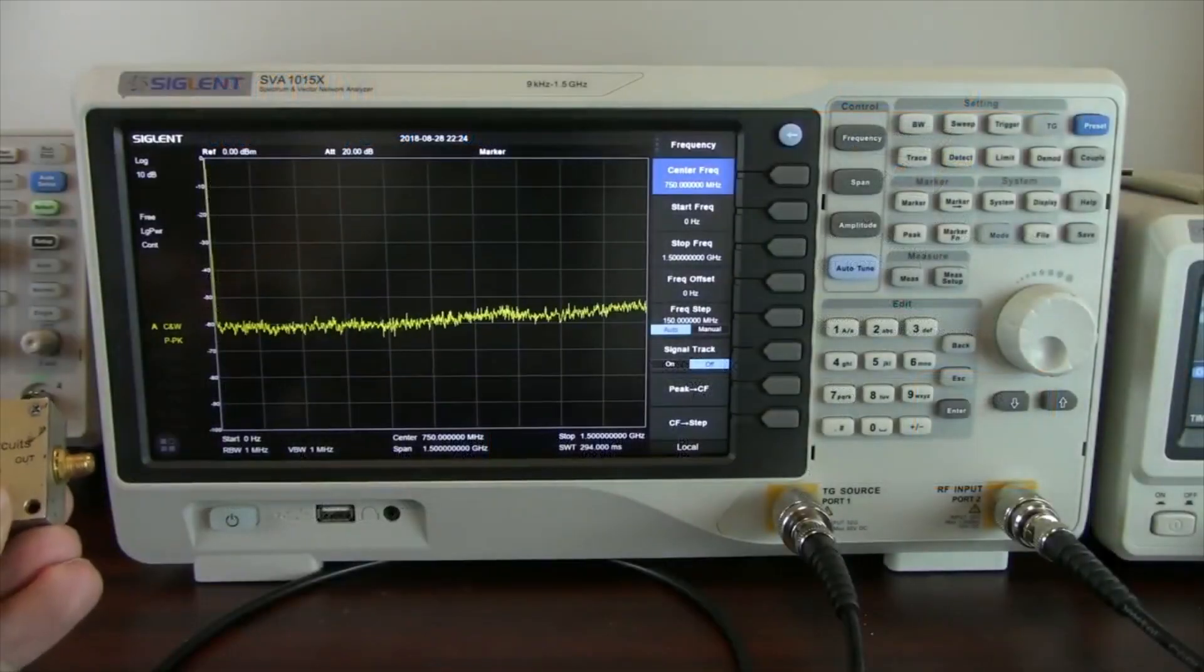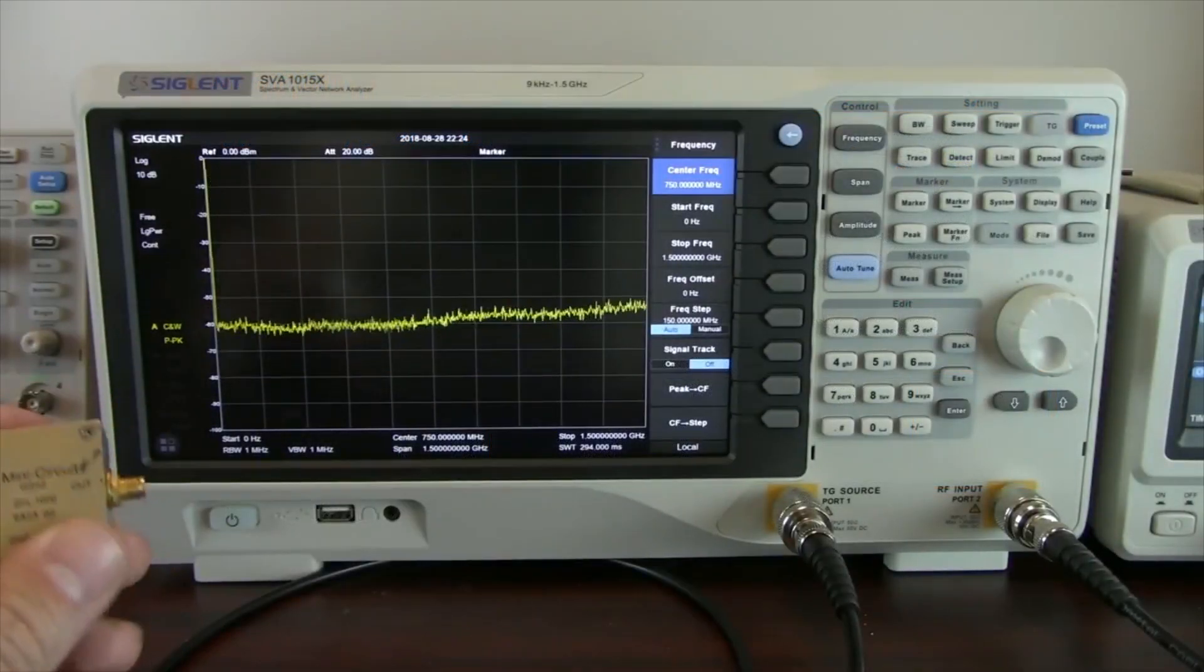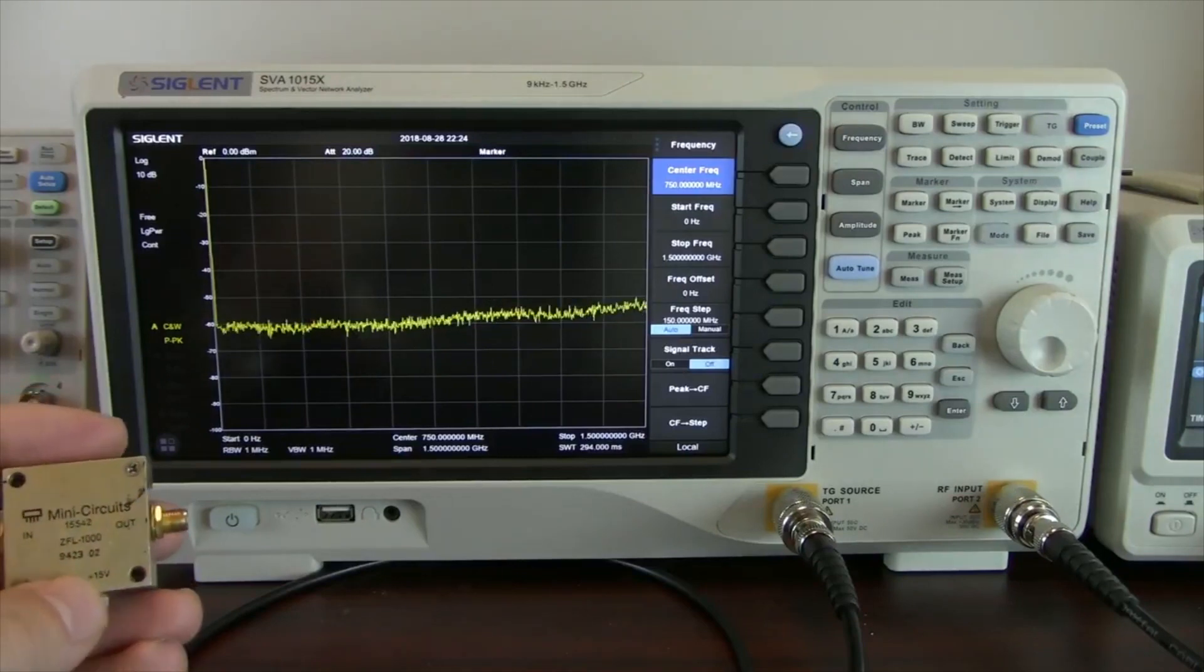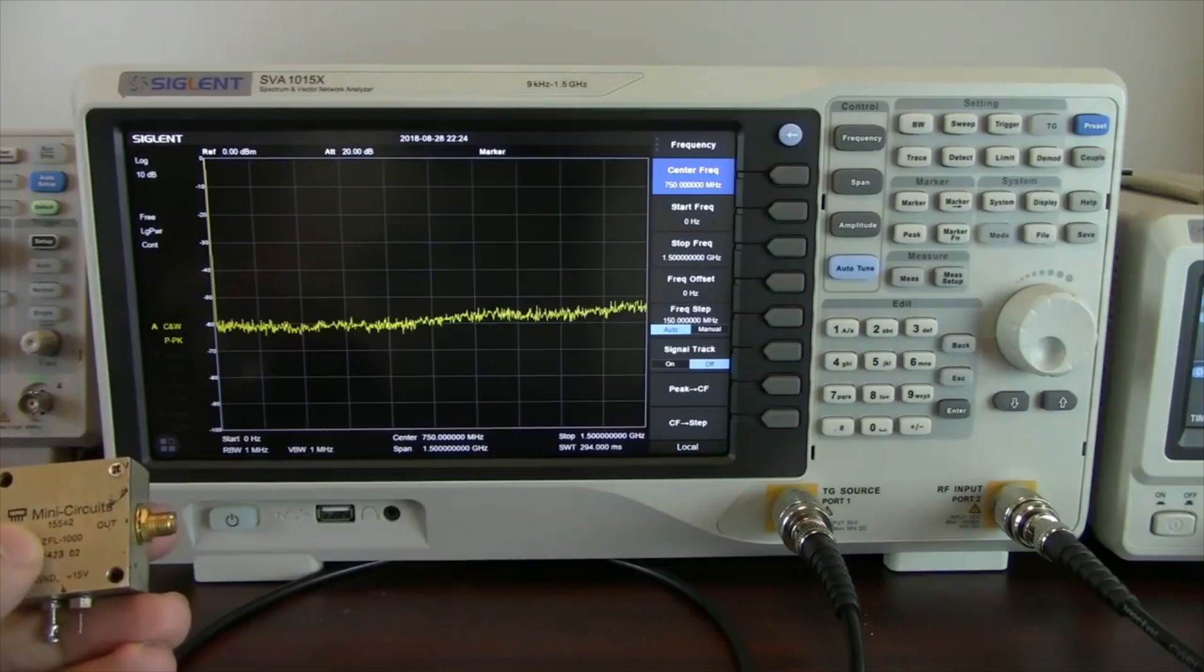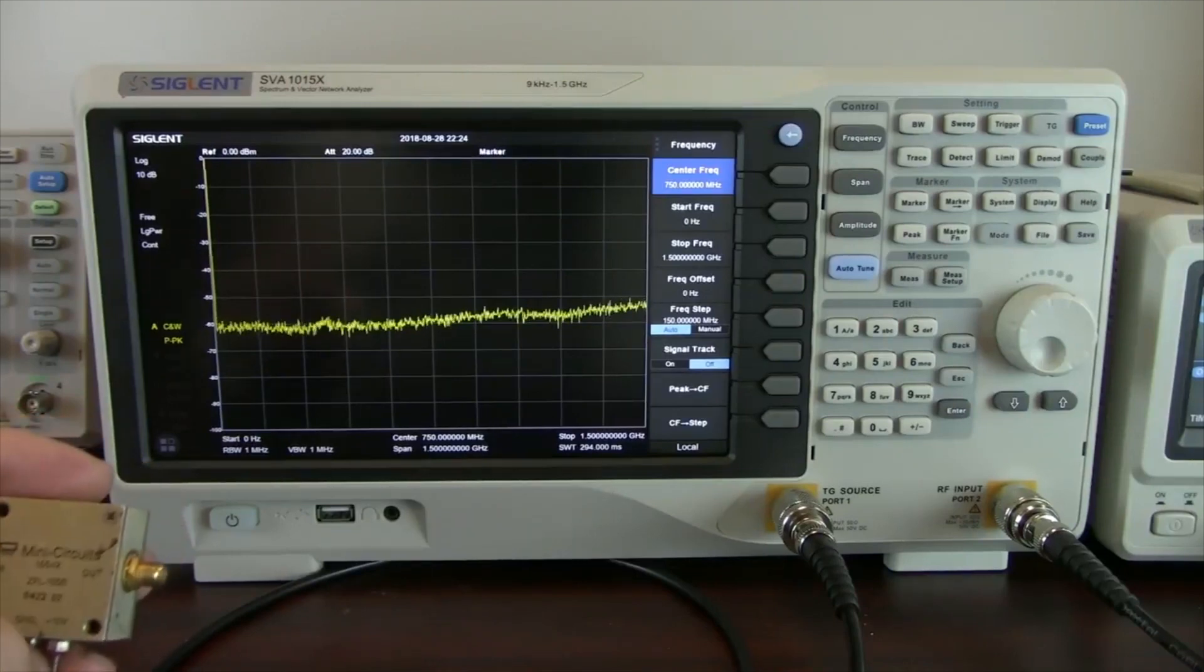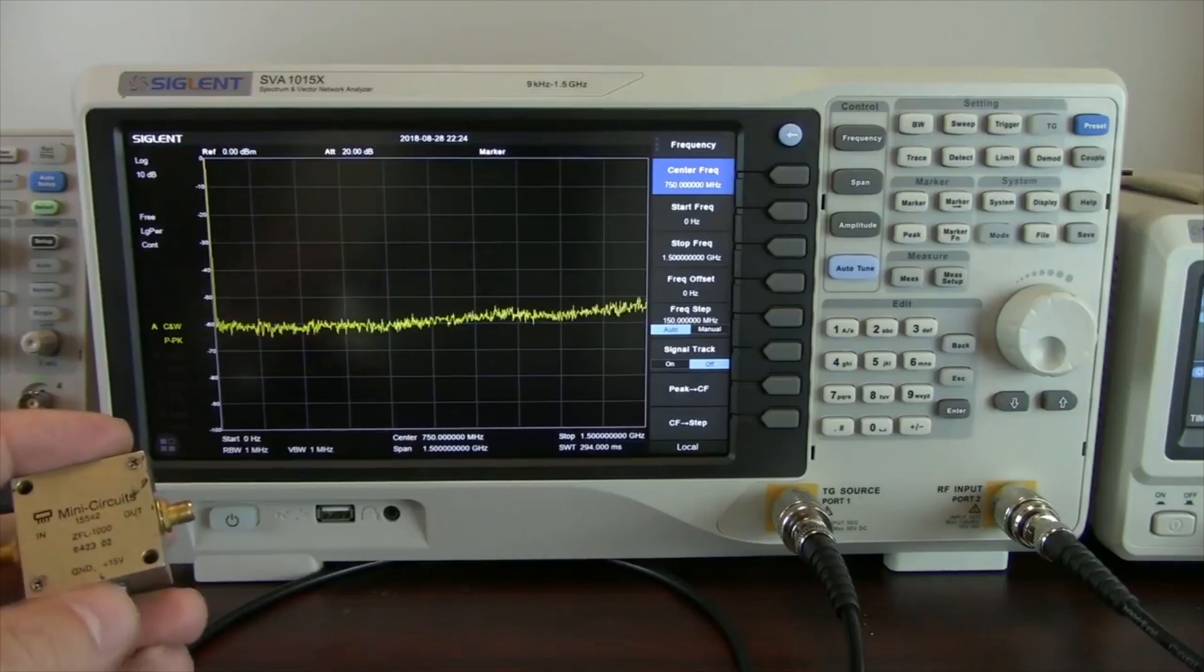That means if we were to have 0 dB in, we'd have 17 dB out. But actually, because of the compression, we don't want to put 0 dB in. We're actually going to start getting compression at about 9 dB, which is shown in the datasheet as the output at 1 dB compression is 9 dB.